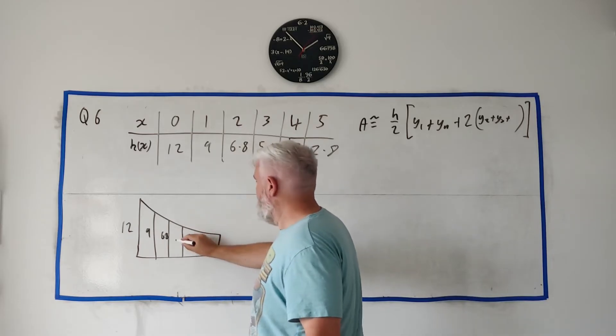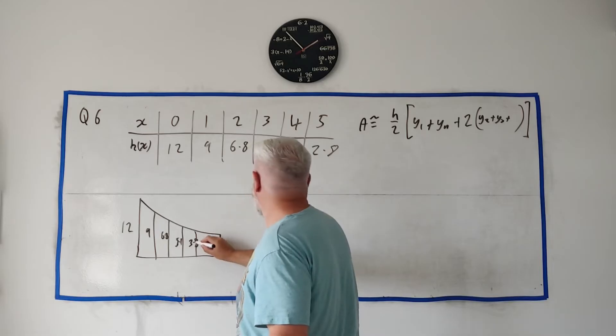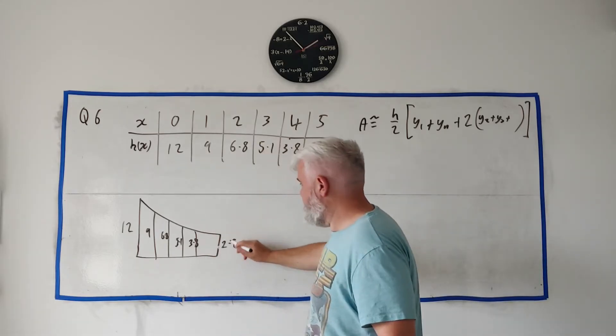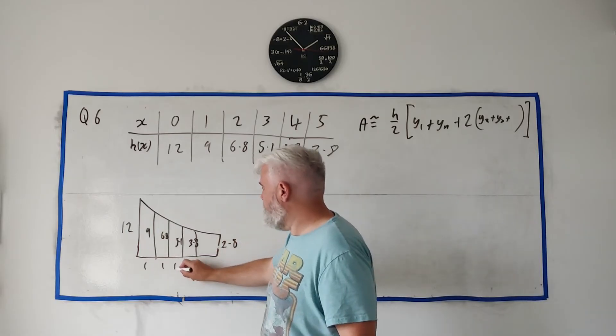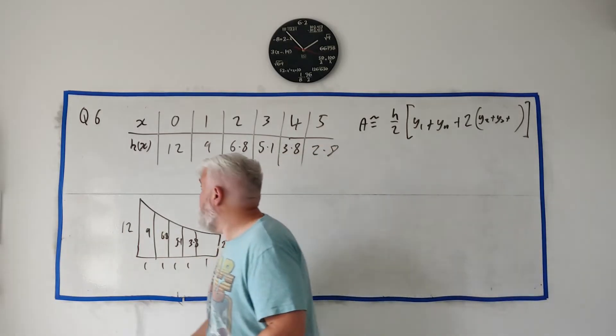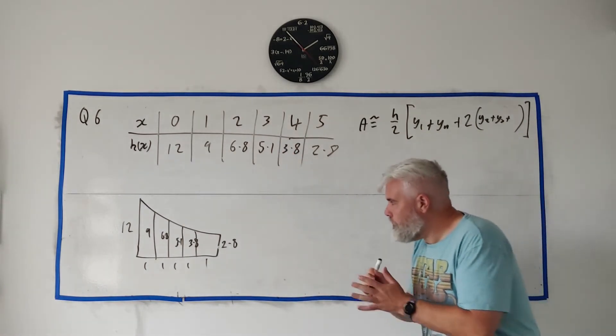We know this number is 12, we know this number is 9, this number is 6.8, 5.1, 3.8, and 2.8. These should all be equal then because the length between them is all one. It's 0, 1, 2, 3. The gap between them is all one.